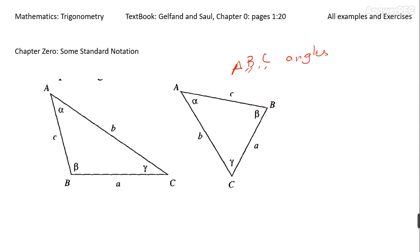Sometimes the angles may also be written as alpha, beta, and gamma for A, B, and C. This is also standard notation: alpha, beta, gamma for angles. Now the interesting thing is that the side opposite angle A is given the small letter a.